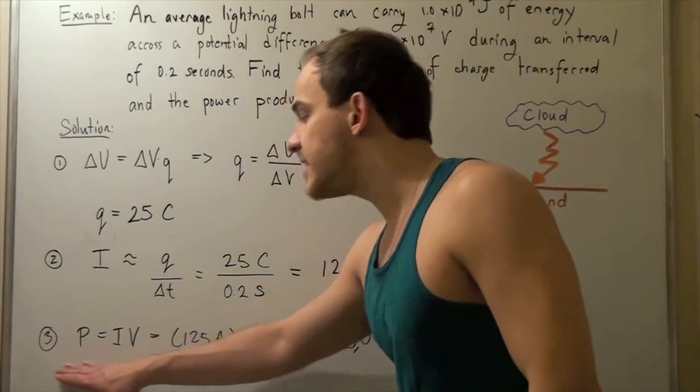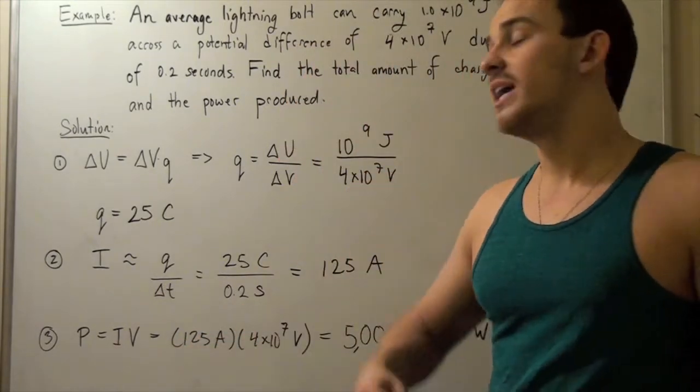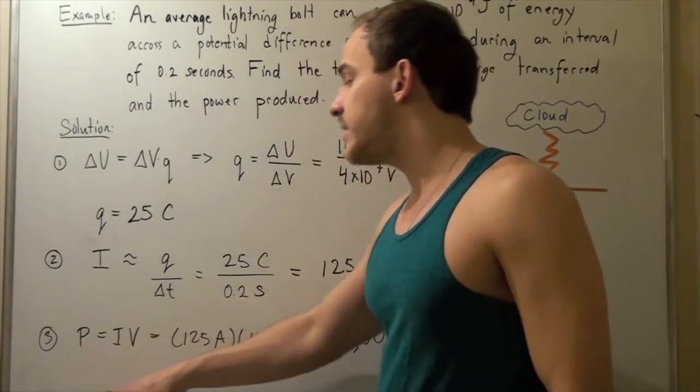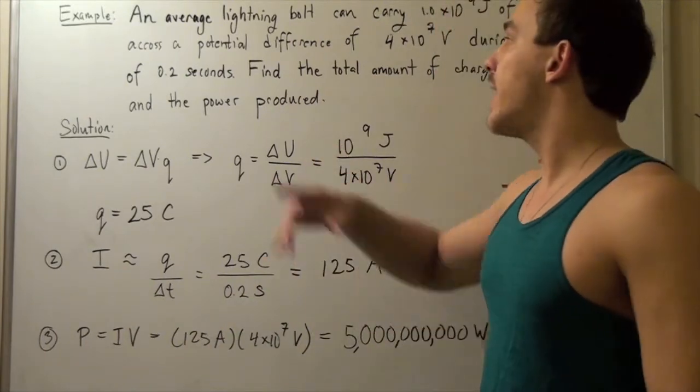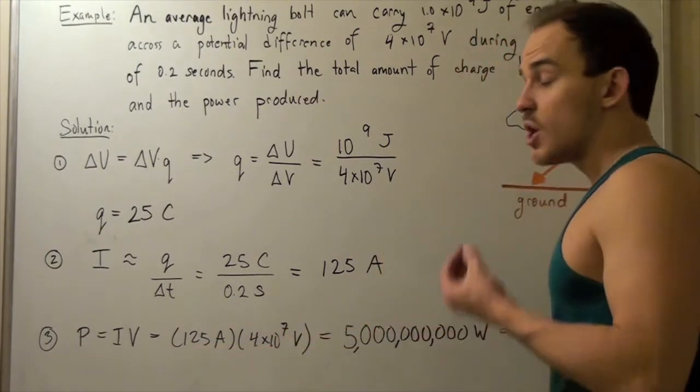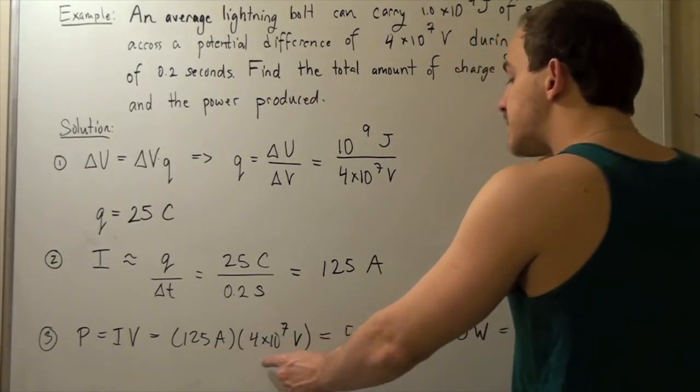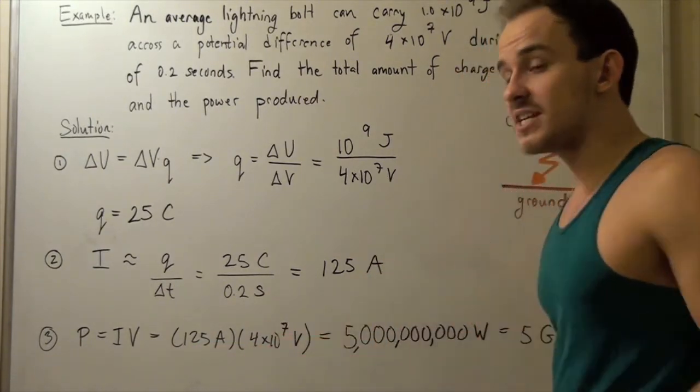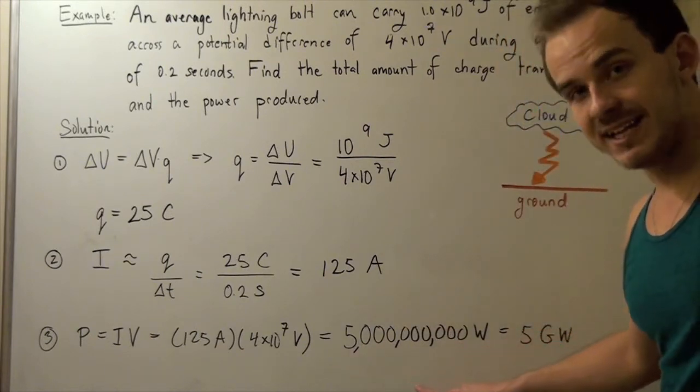Now, in the final example, we want to find the power. To find the power, we simply take our current and multiply it by our potential difference, or voltage. And we get 125 amps multiplied by 4 times 10 to the 7 volts, gives us 5 billion watts.